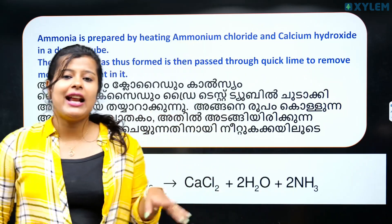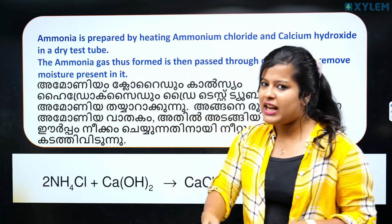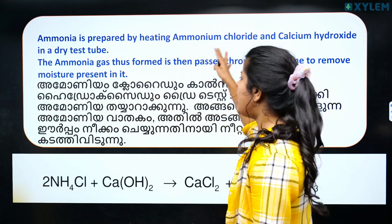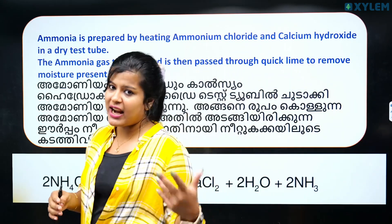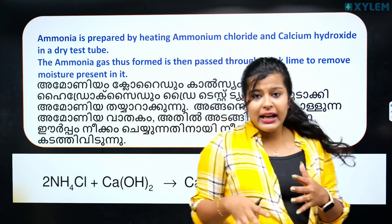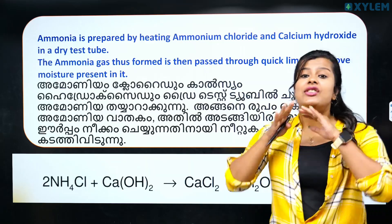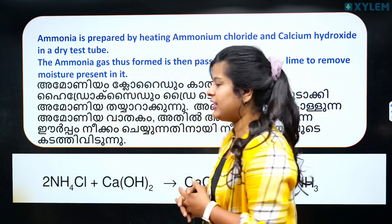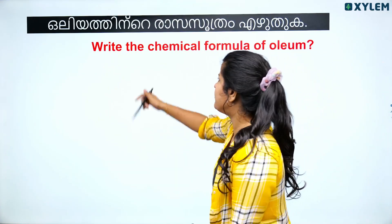If this question is asked, the answer is: ammonium chloride and calcium hydroxide are heated in a dry test tube. Ammonia is prepared, and then the moisture is removed using CaO. Remove the moisture from the ammonia using CaO.